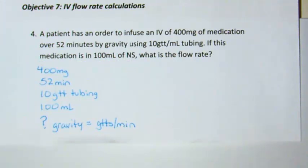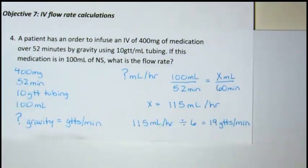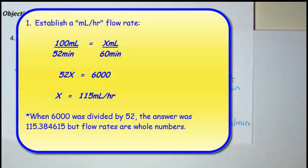If we refer back to the question, it asks for this to infuse by gravity, meaning our flow rate will be drops per minute. Knowing my question is drop per minute, I must first establish my milliliter per hour flow rate. When I do that, x is equal to 115 milliliters per hour based on 100 milliliters infusing in 52 minutes.